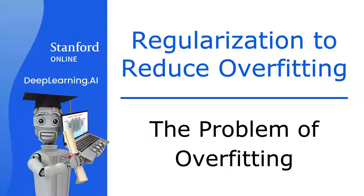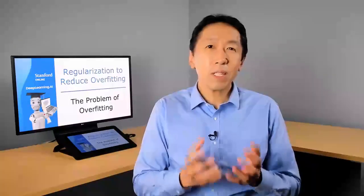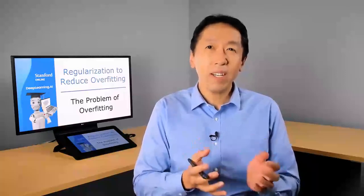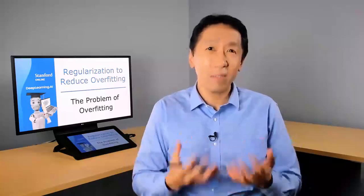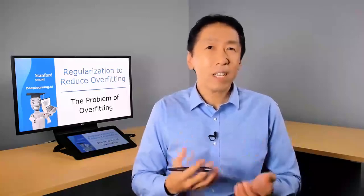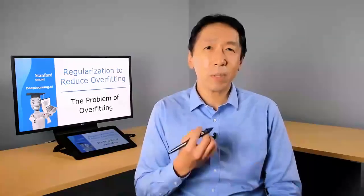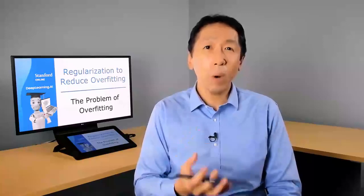Now you've seen a couple of different learning algorithms, linear regression and logistic regression. They work well for many tasks, but sometimes in an application, the algorithm could run into a problem called overfitting, which can cause it to perform poorly. What I'd like to do in this video is to show you what is overfitting, as well as a closely related, almost opposite problem called underfitting. And in the next videos after this, I'll share with you some techniques for addressing overfitting.